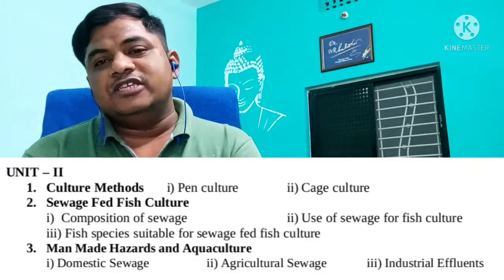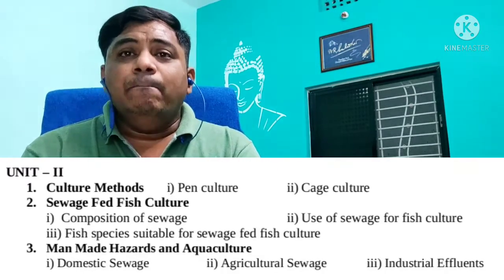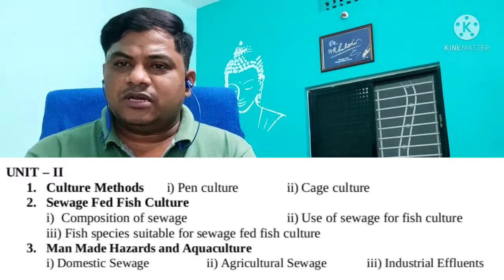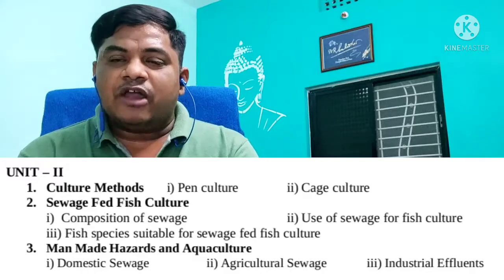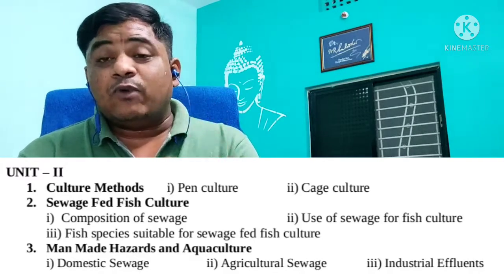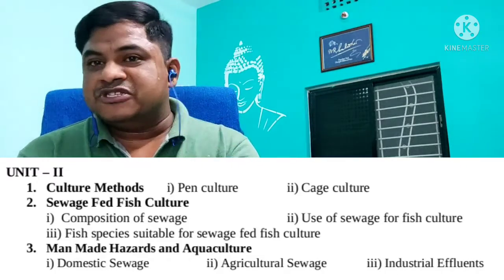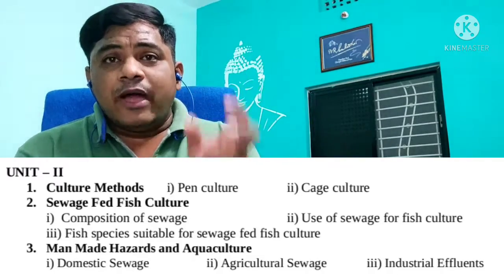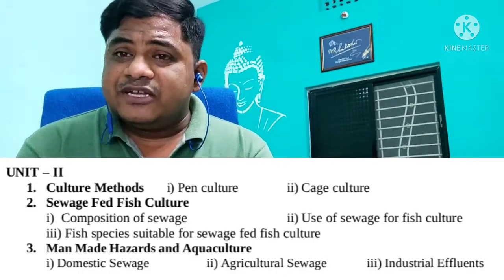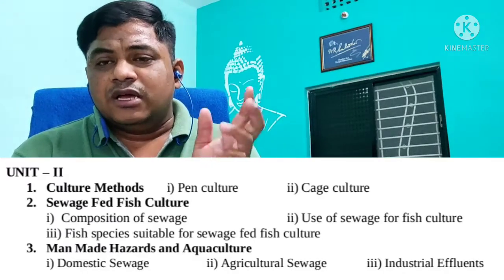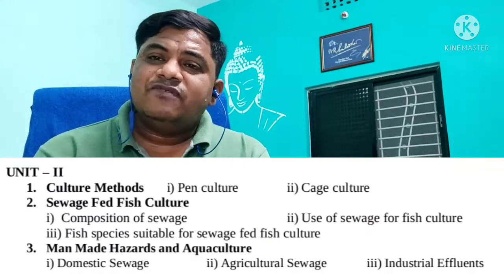The last part of Unit Two is man-made hazards and aquaculture — how we disturb the aquatic environment by introducing pollutants into water bodies. We discuss domestic sewage, agricultural sewage, and industrial effluents, all of which are covered in Unit Two.